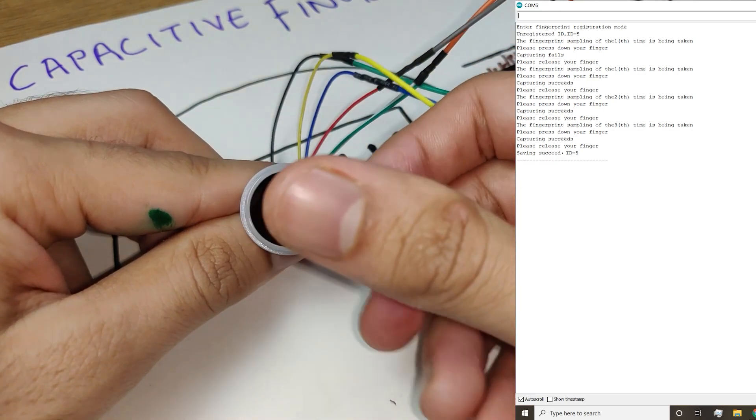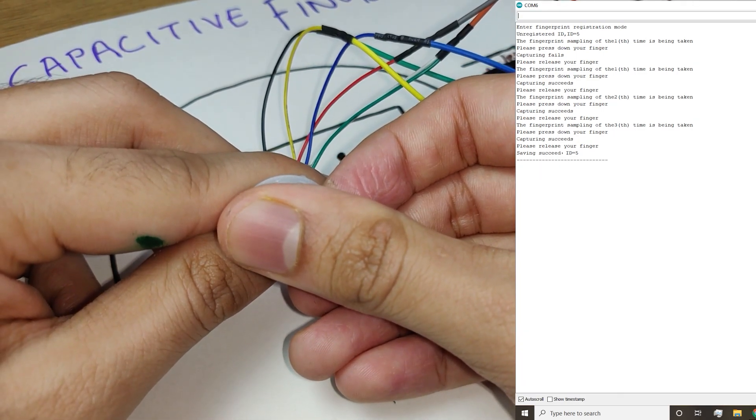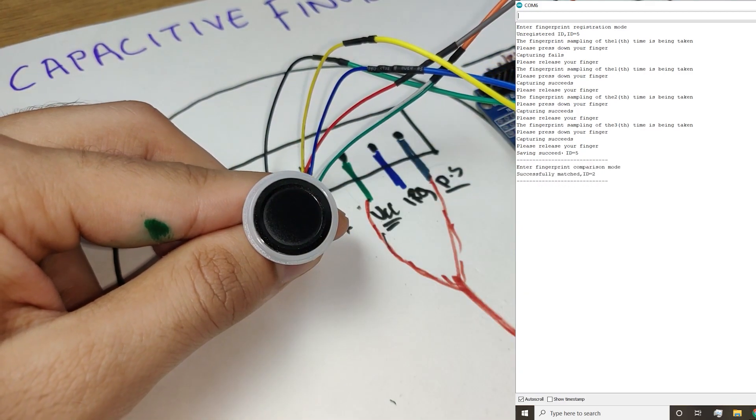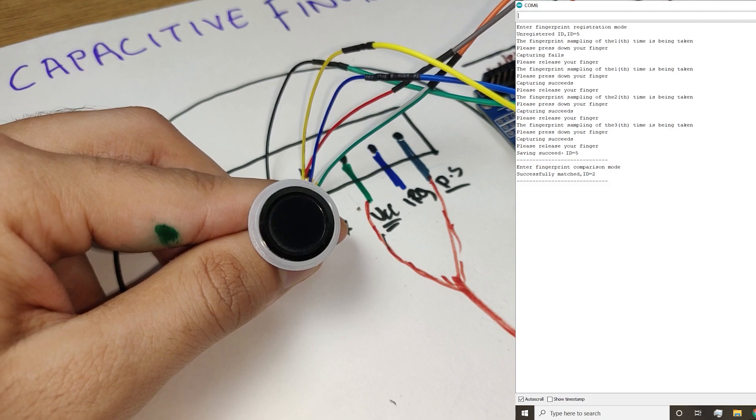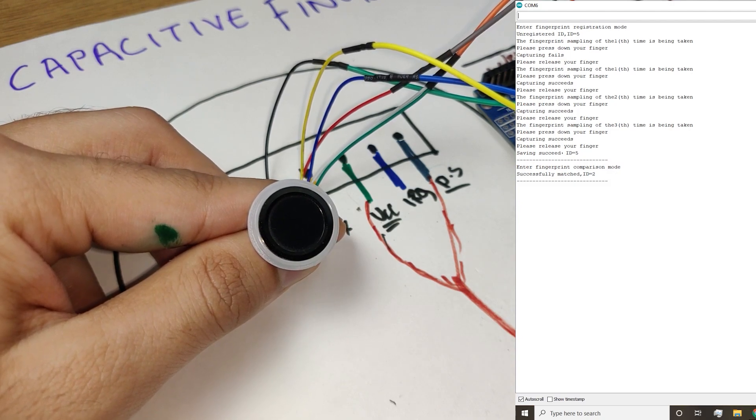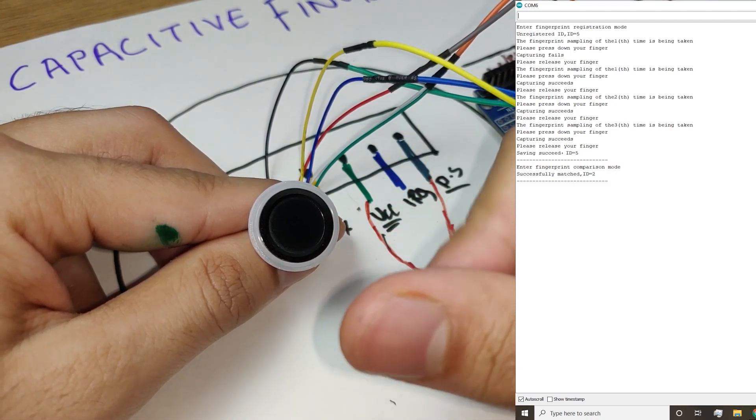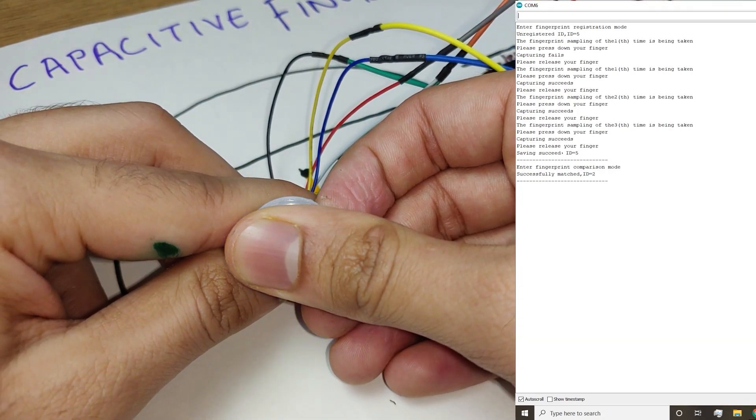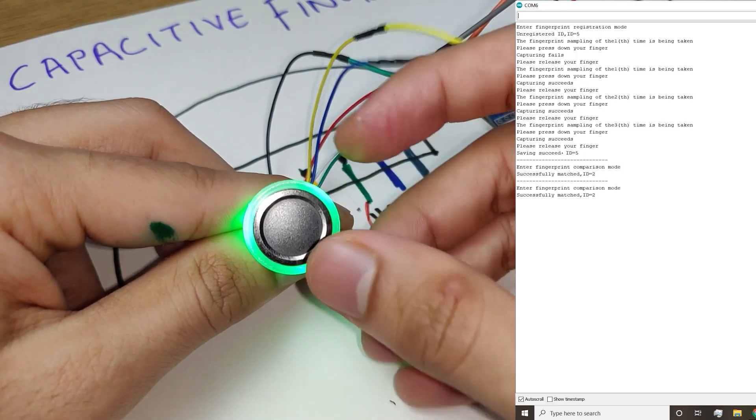Now in the first mode when we just touch the finger, after three blinks it shows a green light and it says that it has matched with ID2. So I already enrolled this thumb with ID2 as well so that is why it's showing duplicate. So ID2 and ID5 are kind of the same. On third it again says green that it got detected on ID2.